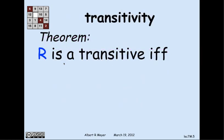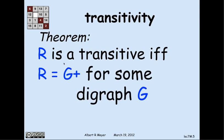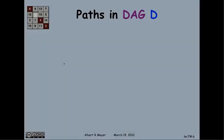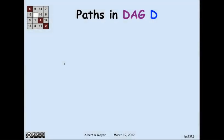The basic theorem is: what is transitivity capturing as a property of a relation? A relation r is transitive if and only if r equals the positive walk relation for some digraph g. The proof is essentially trivial, because you can let the relation r itself be the digraph that it's the positive path relation of.